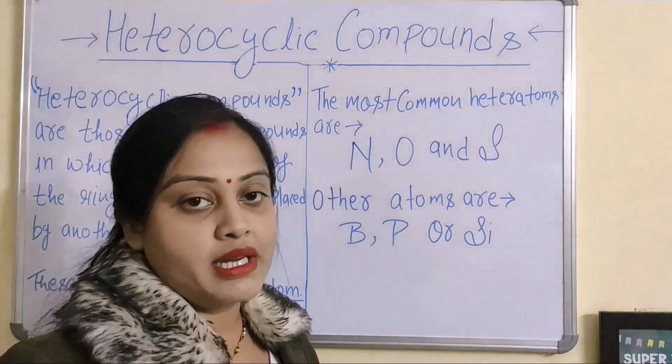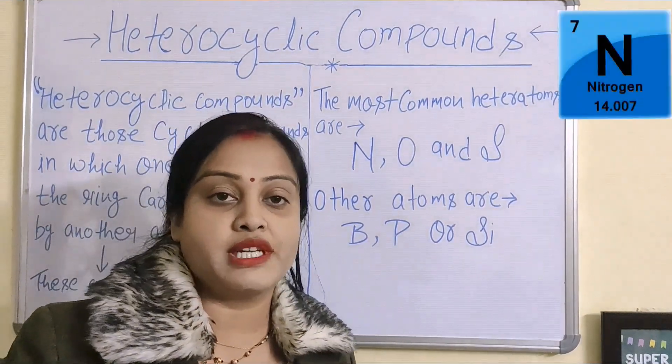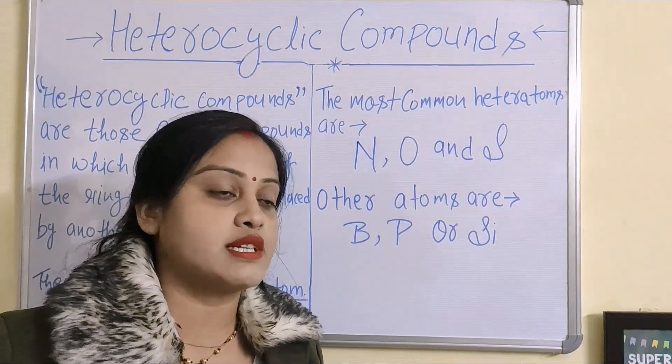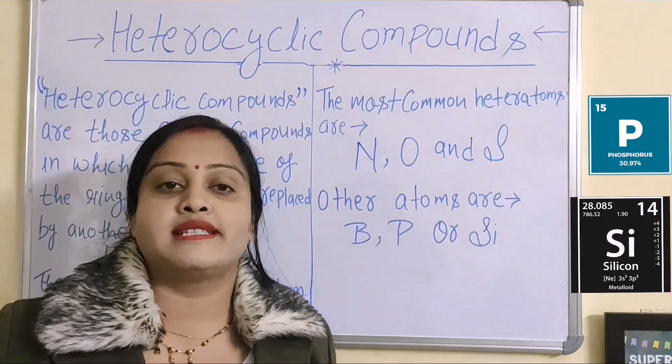Basically, the most common heteroatoms are nitrogen, oxygen and sulfur. And other heteroatoms are used such as boron, phosphorus and silicon.